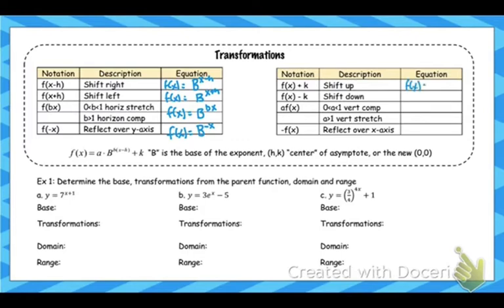Shifting up would be outside and away from the exponent. Shifting down — also away from the exponent. A number multiplied by the base is a vertical stretch or compression, depending on the value. Then if you have a negative on the outside, that is a reflection over the x-axis. Keep in mind that negative is not in the exponent — we do not have a negative base. That's not going to be an exponential function if we do.